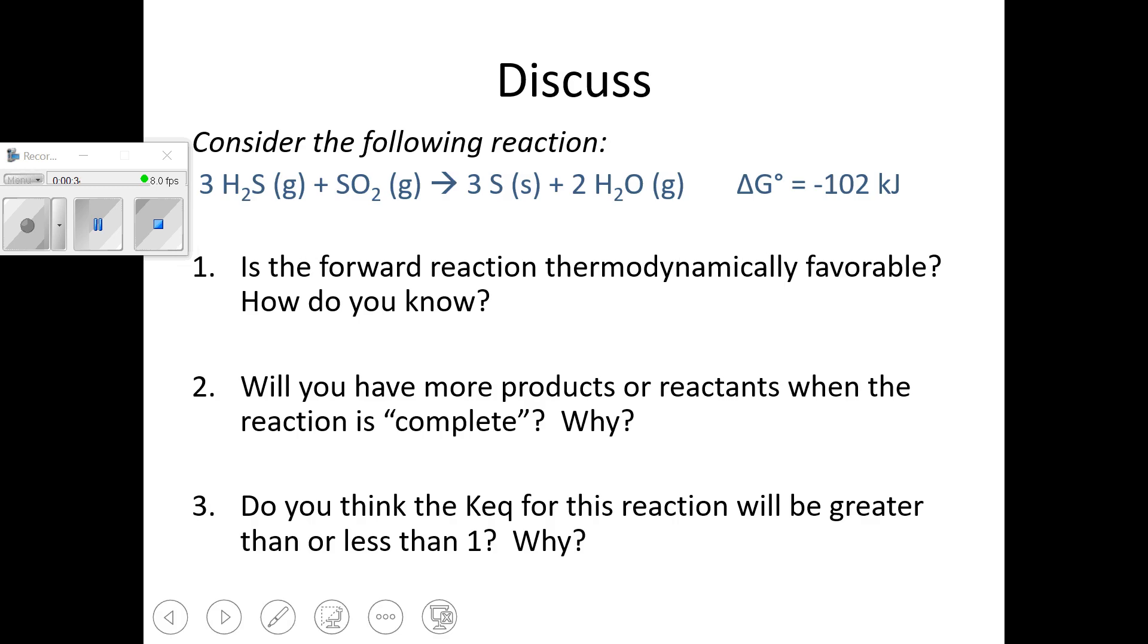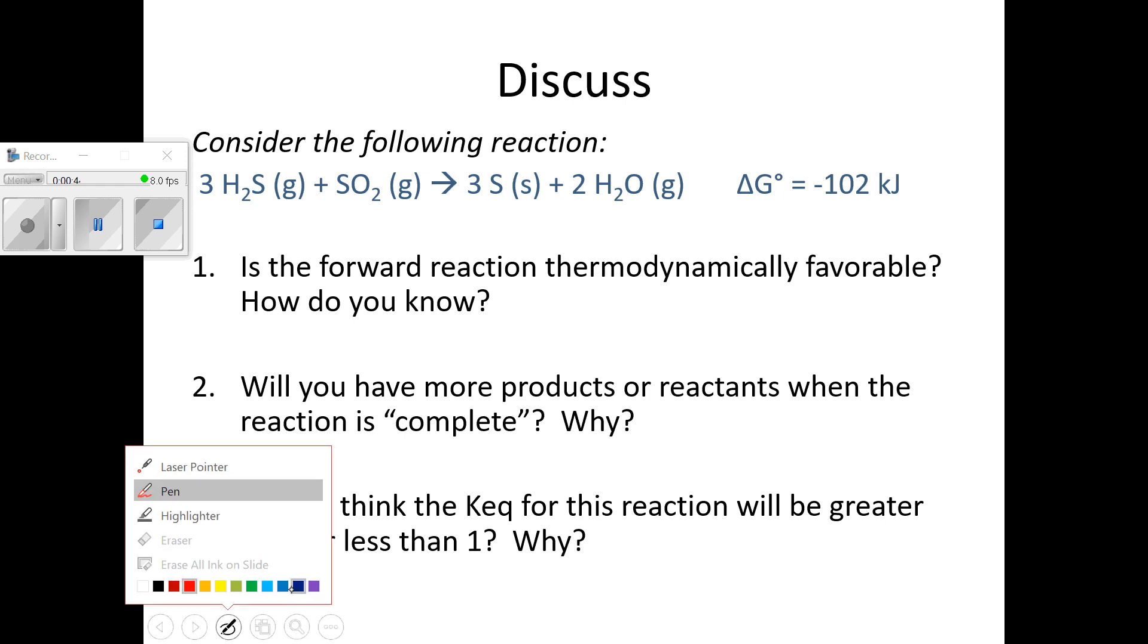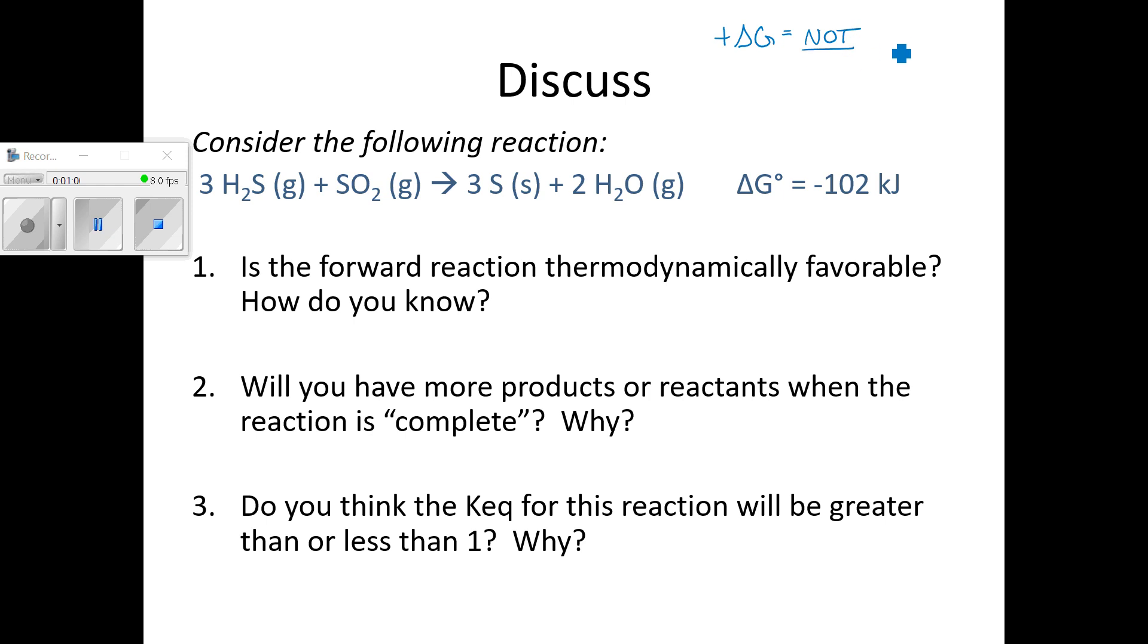The first thing for you to pause and think about is this reaction right here. We've got the reaction, we've got a delta G value. And the question asked me, is this forward reaction thermodynamically favorable? What we might remember from thermo is that thermodynamic favorability depends upon the sign of delta G. So if your delta G value is positive, that means your reaction is not thermodynamically favorable. That means it will not proceed spontaneously.